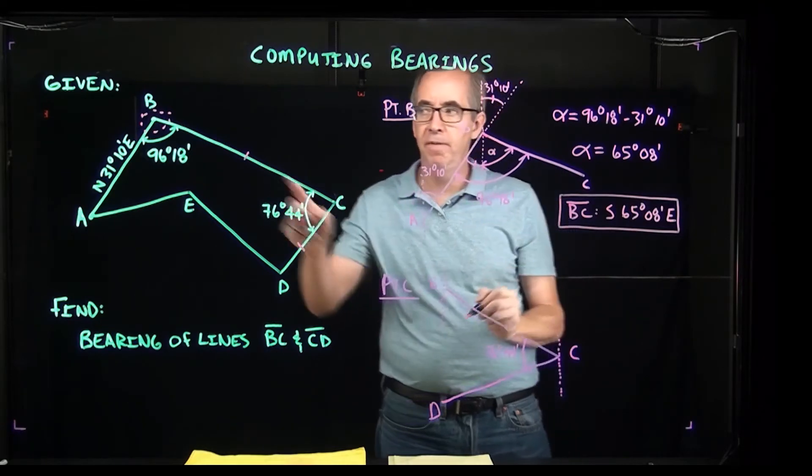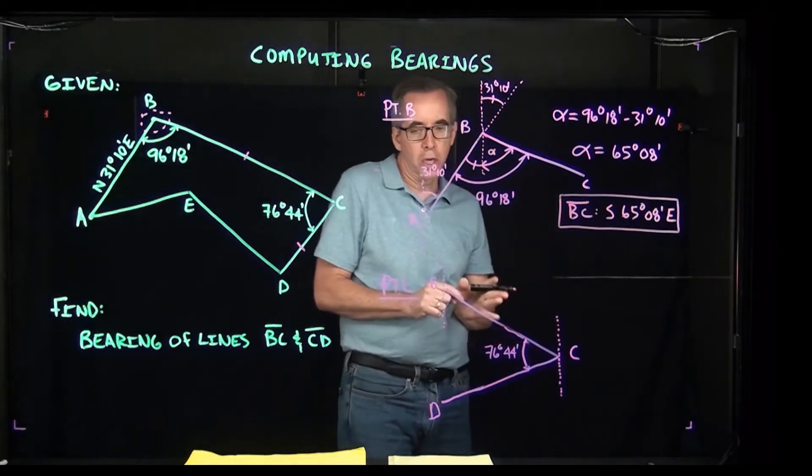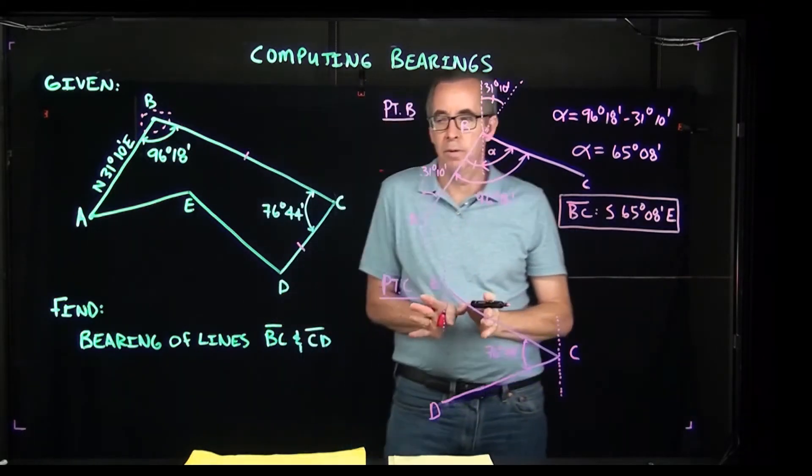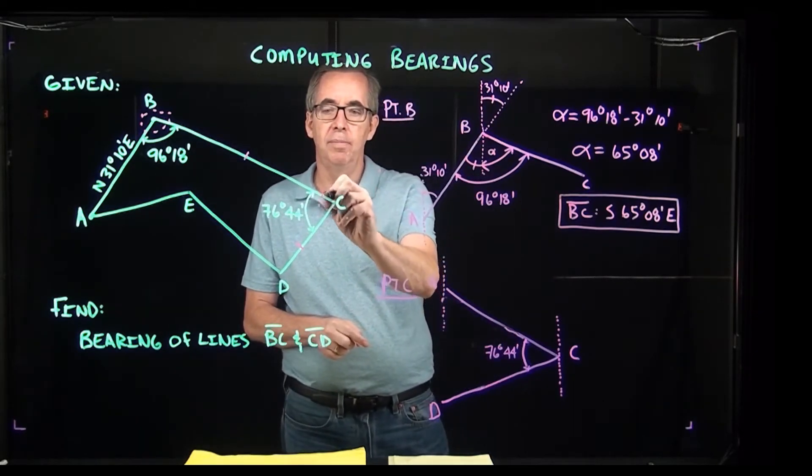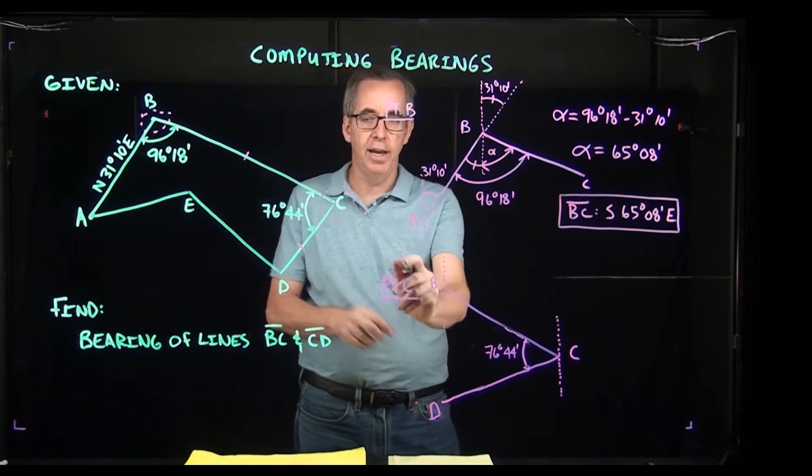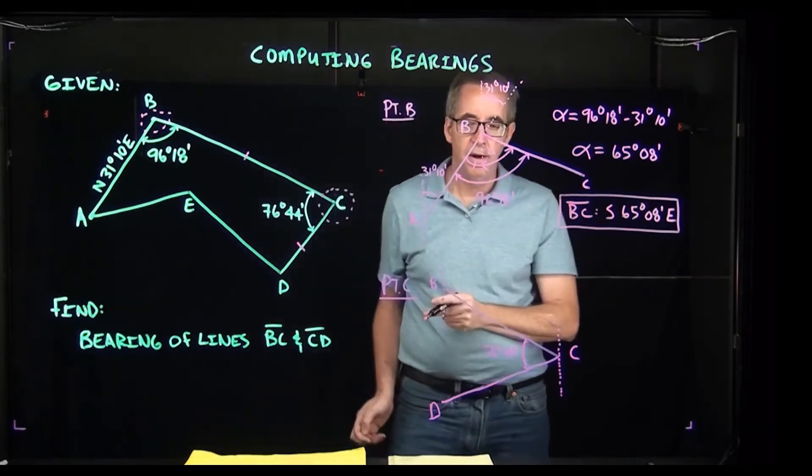Now we figured out the bearing for this line. We're going to use a similar approach to get the bearing for CD. Our point of interest right now is this point here, C, so you can see I went through and I have a detail of C.